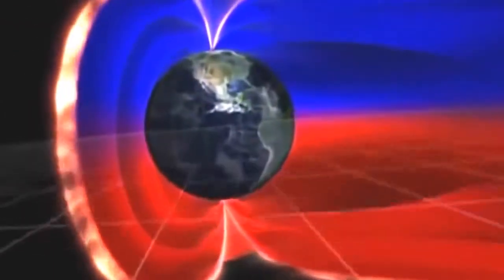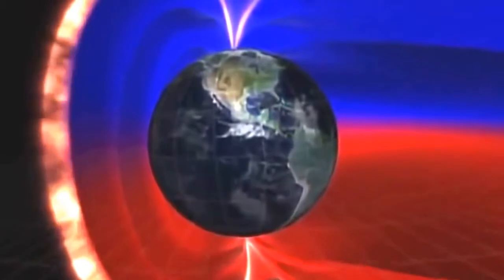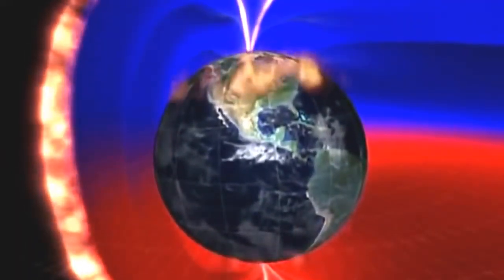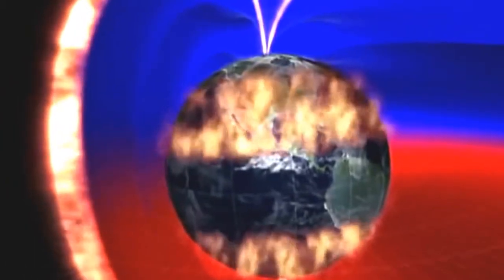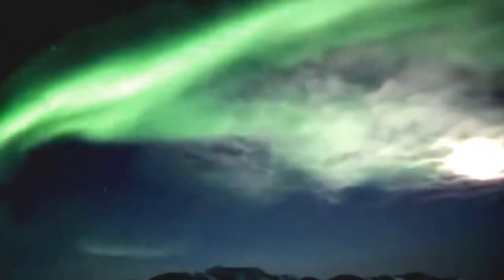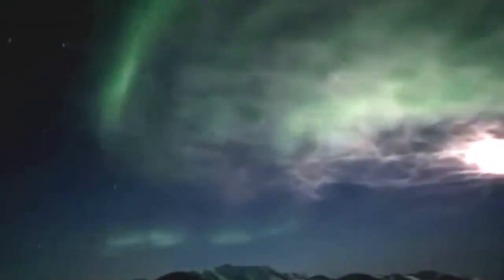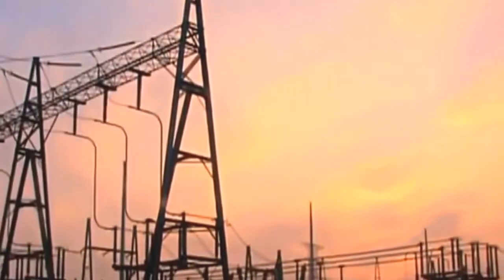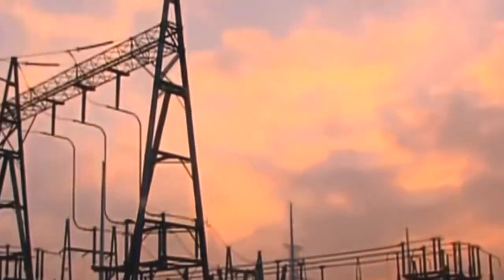The storm is so intense, Earth's magnetic field all but collapses. Millions of tons of plasma spill towards the equator, and a powerful electric surge pulses over the globe. For the largely pre-electrified world, the moment passes with minimal damage. That might not be the case today.